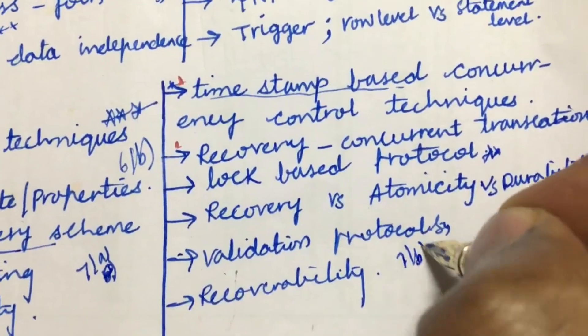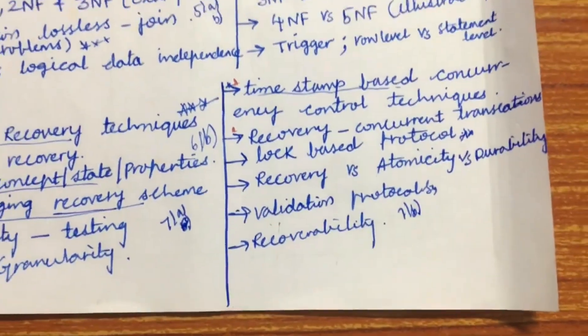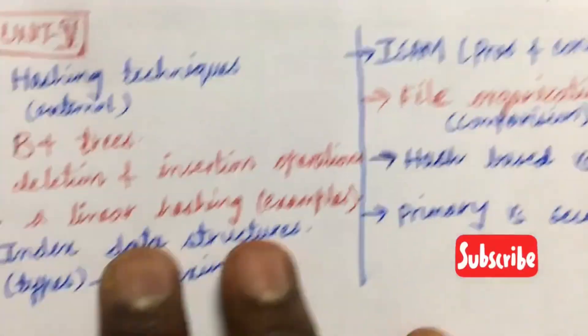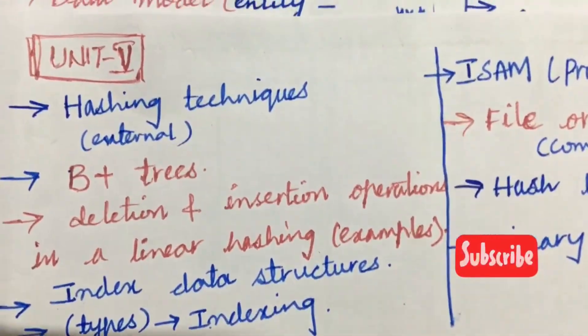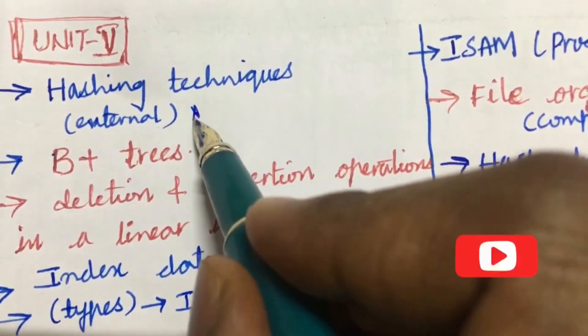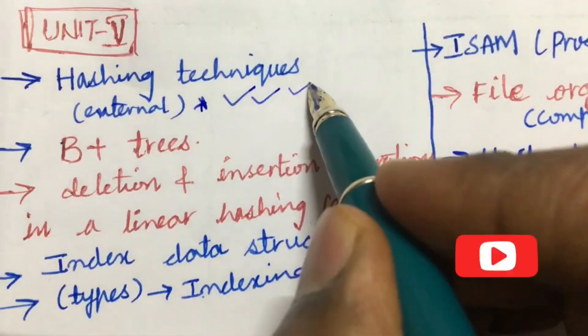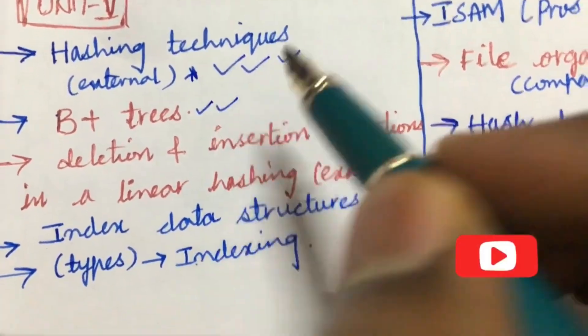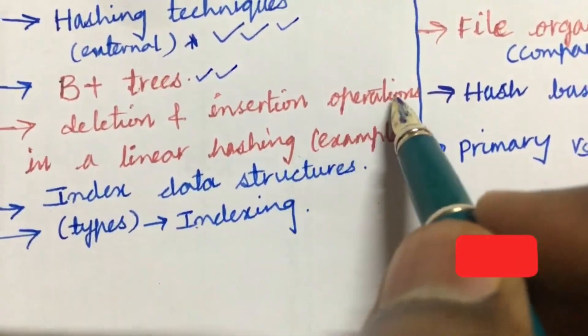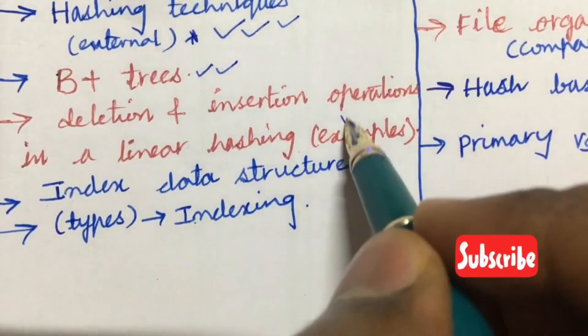Taken into consideration even Unit 5 also, that is also very important. The hashing techniques will be asked, hashing techniques, external technique is asked several times. B+ trees is also asked and the deletion and insertion operations in a linear hashing along with its examples.